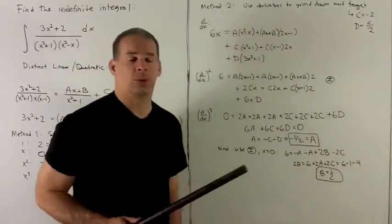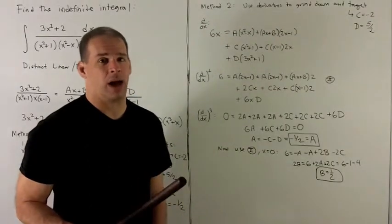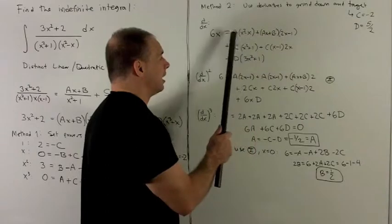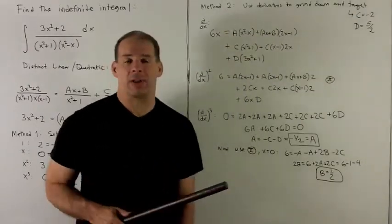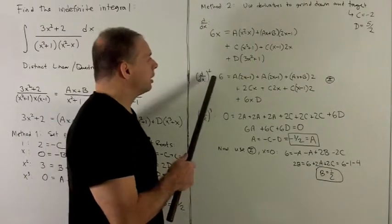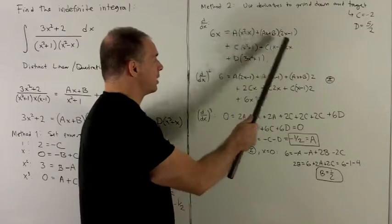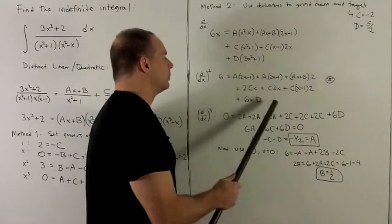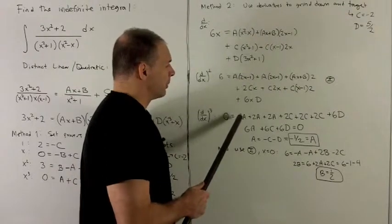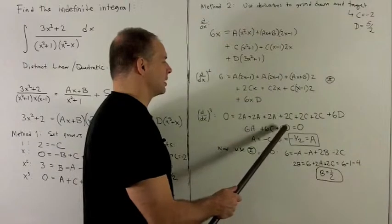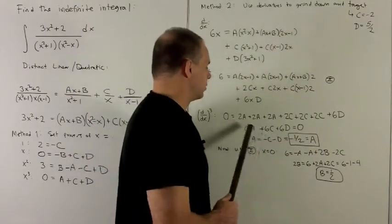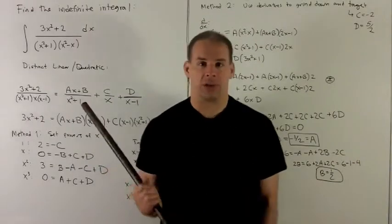If two polynomials are equal, taking the derivative on each side preserves the equality. For the first derivative, we get 6x on the left. For the second derivative, we get 6 on the left. For the third derivative, the left side gives 0, and the right side gives 6a + 6c + 6d = 0, so a = −c − d = −1/2.